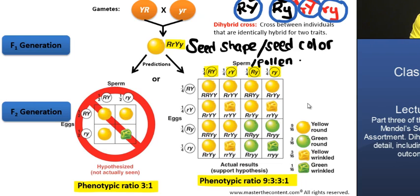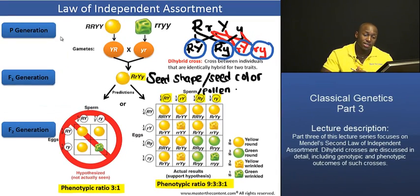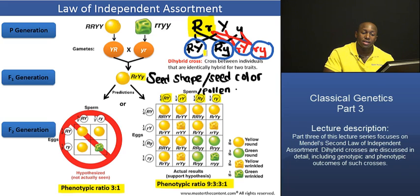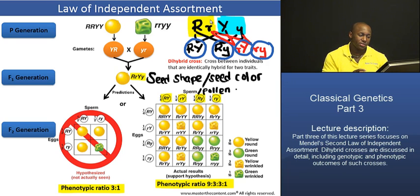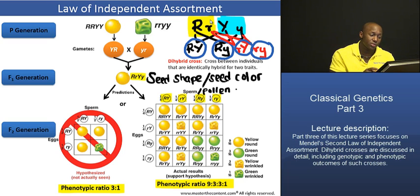This phenotypic ratio confirmed Mendel's notion that alleles for one gene are sorted into gametes independently of the alleles of other genes. For example, the gene determining seed shape is sorted independently of the gene determining seed color. Mendel tested several pea characters in various dihybrid combinations, and he always observed the 9:3:3:1 phenotypic ratio.